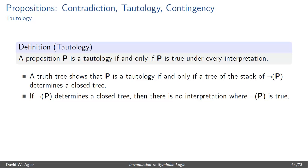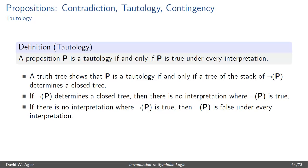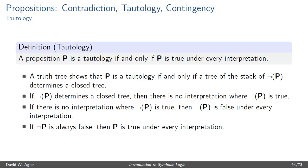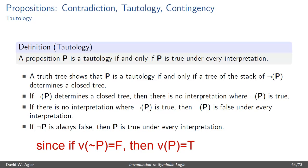The idea is that if the literal negation of P determines a closed tree, then there's no interpretation where the negation of P is true — no way to assign truth values to the propositional letters that compose ¬P that would make ¬P true. So if there's no interpretation that makes ¬P true, then ¬P is false under every interpretation, meaning ¬P is a contradiction. And if ¬P is always false, then the removal of that negation — that is simply P — is true under every interpretation.